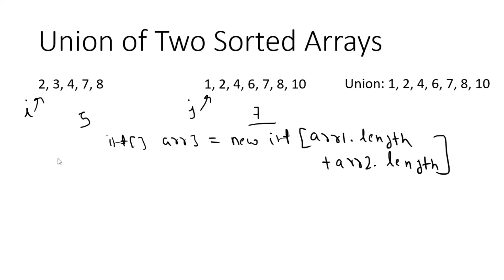I will keep inserting values into array 3 after comparison. First I check the ith and jth index values, and whichever is smaller, I put that value into array 3 and increase that index. In this case the jth value 1 is smaller than 2, so I put 1 and increase j. Now both i and j point to 2, so the values are equal — take any one value, put it in the new array, and increase both indexes.